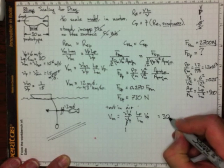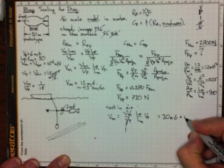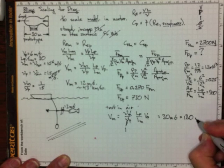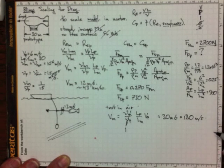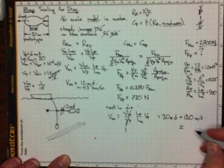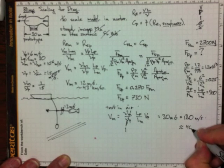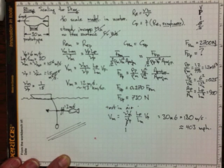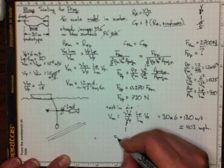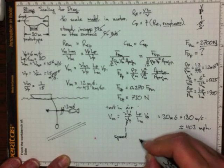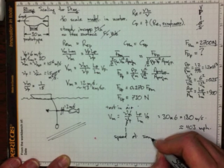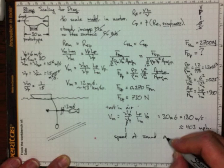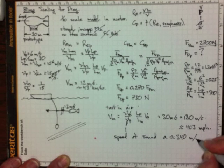That's 30 times 6 is 180 meters per second. That's roughly 403 miles per hour. Speed of sound in air is about 340 meters per second.